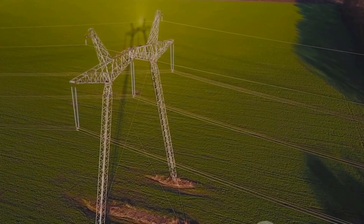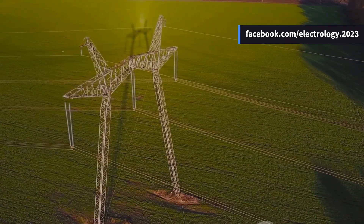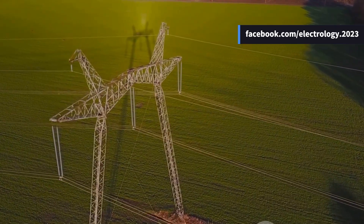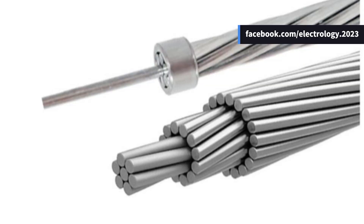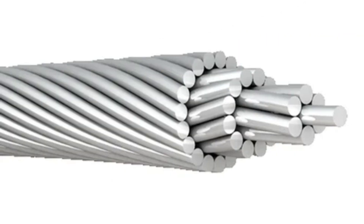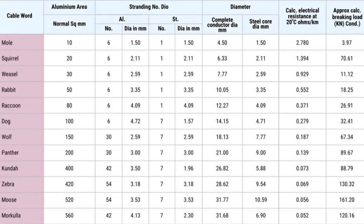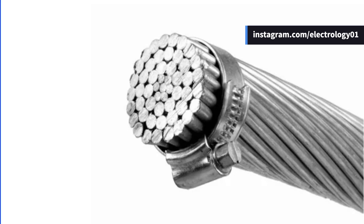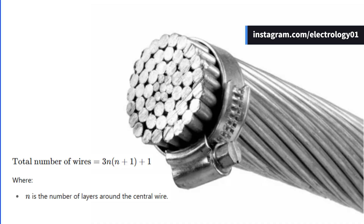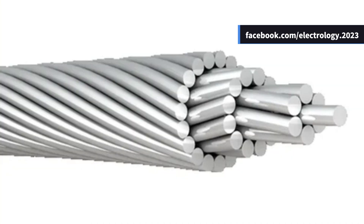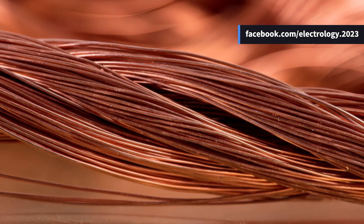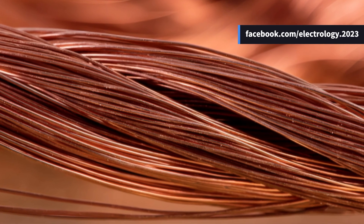Using solid conductors with large cross sections over longer spans risks mechanical fatigue and eventual fracture due to constant vibration and swinging. Stranded conductors are more flexible, consisting of a central core wire around which successive layers of wires are wound — typically 6, 12, 18, 24, and so on. If there are n layers, the total number of individual wires is given by the formula 3n(n+1)+1. These layers are twisted in opposite directions to bind them tightly together.